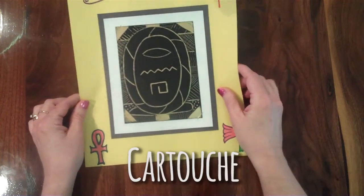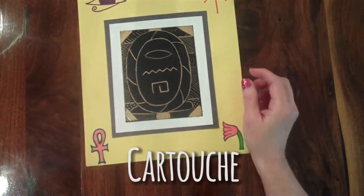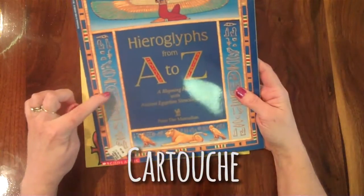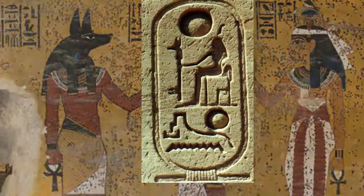We're going to be making an Egyptian cartouche. Now a cartouche is an oblong form that you see right here and it contains the name of a pharaoh.